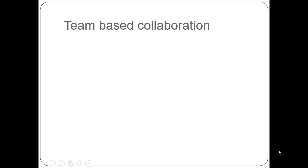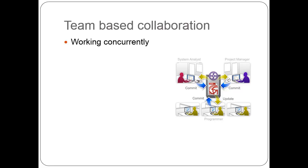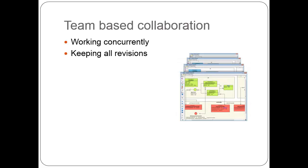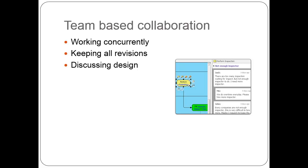There are three main features in team-based collaborations. First, it allows you to work concurrently. You don't need to wait for other team members to complete their work before you can start, and you will not step on each other. Secondly, the teamwork server keeps all the revisions. All your changes on the diagrams and the model repository are kept on a revision basis, and you can compare between revisions and roll back some changes in case you want to get back to old revisions. Also, the teamwork server allows you to discuss the design within the tools. You don't need to fire up Skype or any other messenger to discuss, and the benefit is you can keep all discussions within the server — easy to trace the reasons for the design.